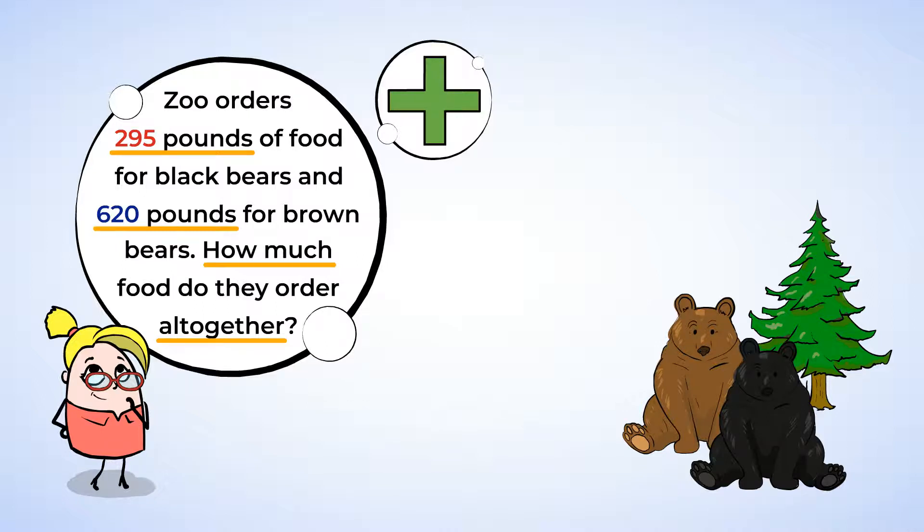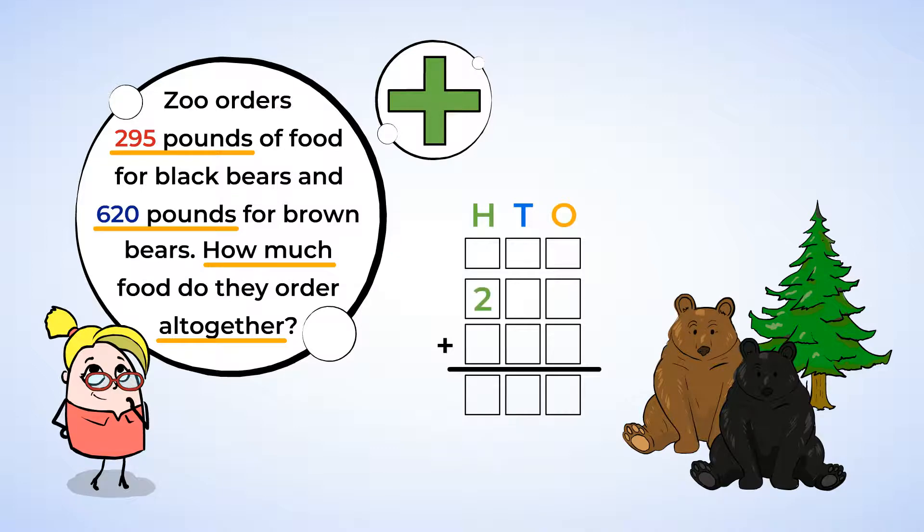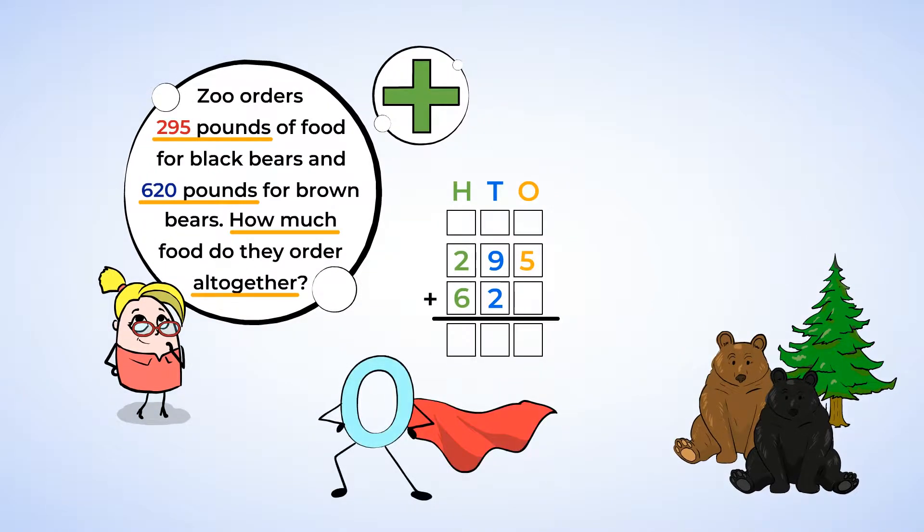First, you can write the equation. For 295, there is a two in the hundreds place, a nine in the tens place, and a five in the ones place. For 620, there is a six in the hundreds place, a two in the tens place, and our friend Zero the Hero has returned to be in the ones place. That means that 620 has no ones.